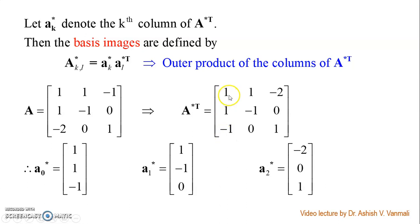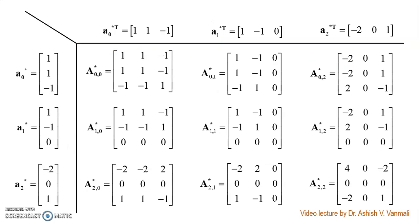The first column of A conjugate transpose is [1, 1, -1], which is vector A_0 conjugate. The second column is [1, -1, 0], which is vector A_1 conjugate. The third column is [-2, 0, 1], which is vector A_2 conjugate. Again we can use the tabular method: write A_0, A_1, A_2 conjugate as column vectors and their transposes A_0, A_1, A_2 conjugate transpose as row vectors.